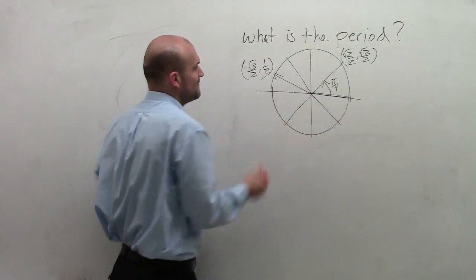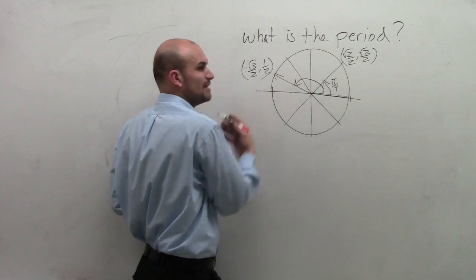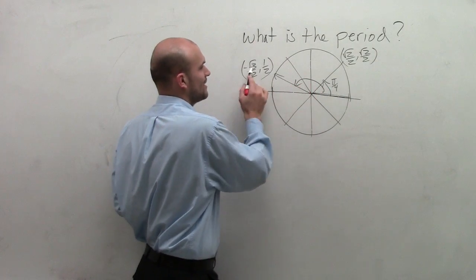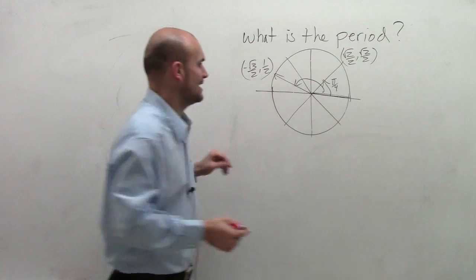And for all these points, each one of these input values which we call our angles, we can evaluate for sine and cosine. So here we have negative square root of 3 over 2 comma 1 half, and we keep on going on and on and on.